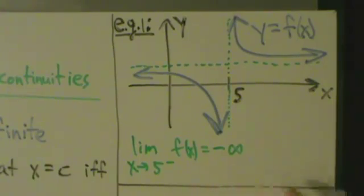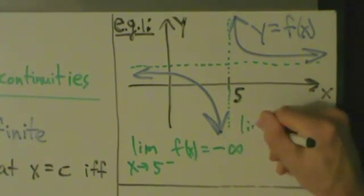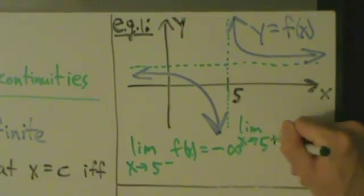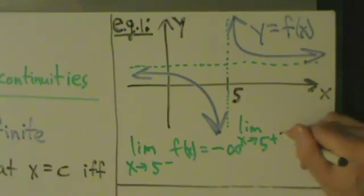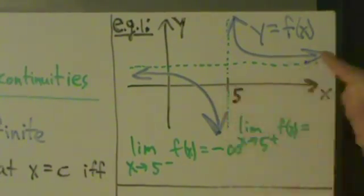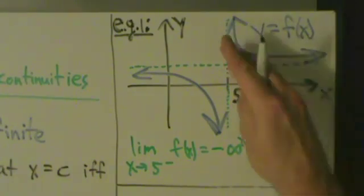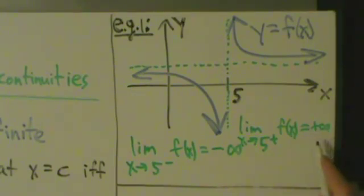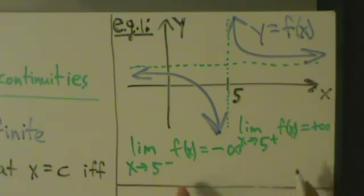But just for the sake of completeness, let's also take a look at the right-hand limit. The limit as x approaches 5 from the right of f of x: if we come into 5 from the right, y is shooting all the way up to positive infinity. So the left-hand limit is negative infinity and the right-hand limit is positive infinity — but either one of these limits by themselves is enough to confirm an infinite discontinuity.